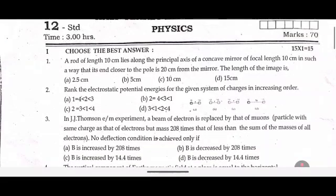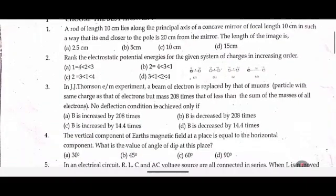Second one: Rank the electrostatic potential energies for the given system of charges in increasing order. Third one: In J.J. Thomson's experiment, a beam of electrons is replaced by a muon particle with the same charge as that of electrons but mass 208 times that of electrons. No deflection condition is achieved only if dash — 4 options.